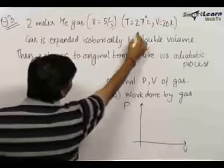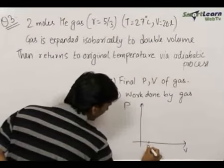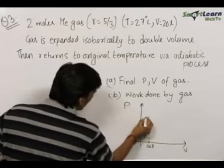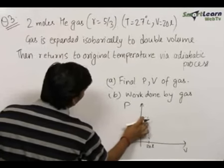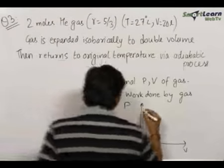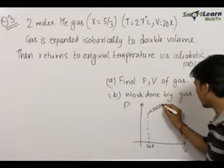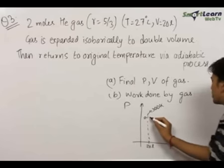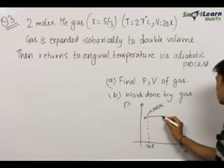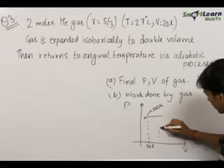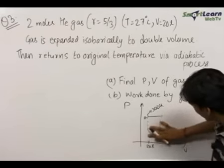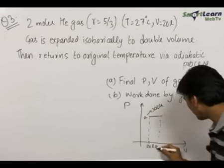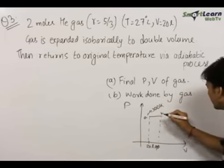Initially, 2 moles of helium gas was at a temperature of 300 Kelvin and 20 liters. So initially the gas was at this point with a pressure — the value of the pressure is not given, the temperature is given to be 300 Kelvin. The temperature here is 300 Kelvin; let this be point A. Under constant pressure it doubles its volume, going to a point where the volume is doubled. The volume at this point will be 40 liters; let this be point B.